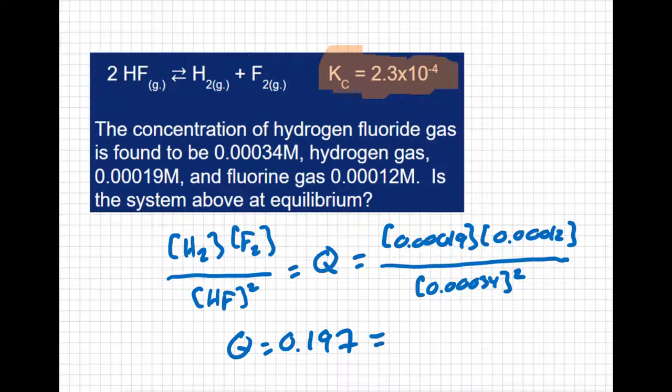Q does not equal K. So we know that we're not at equilibrium. If we were at equilibrium, all of these concentrations would have plugged in and given me my constant. But because they don't, we know we're not at equilibrium.